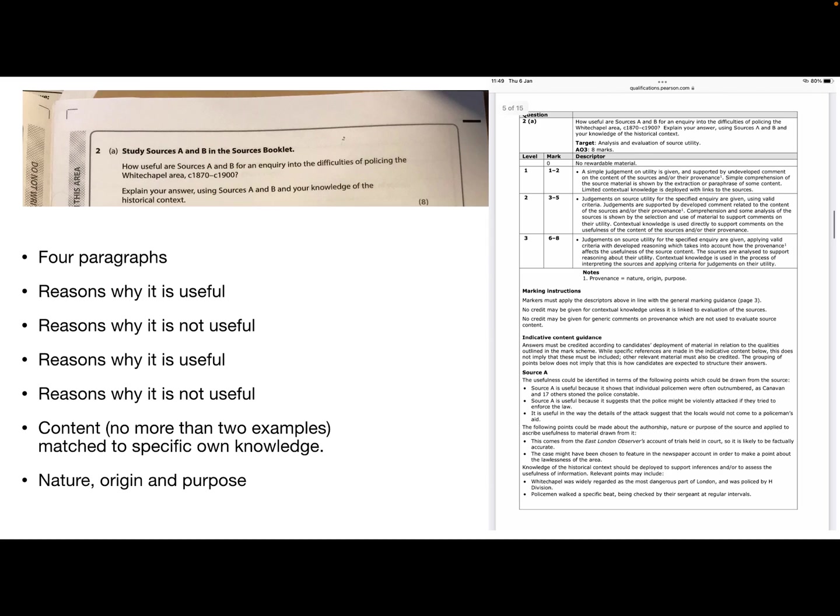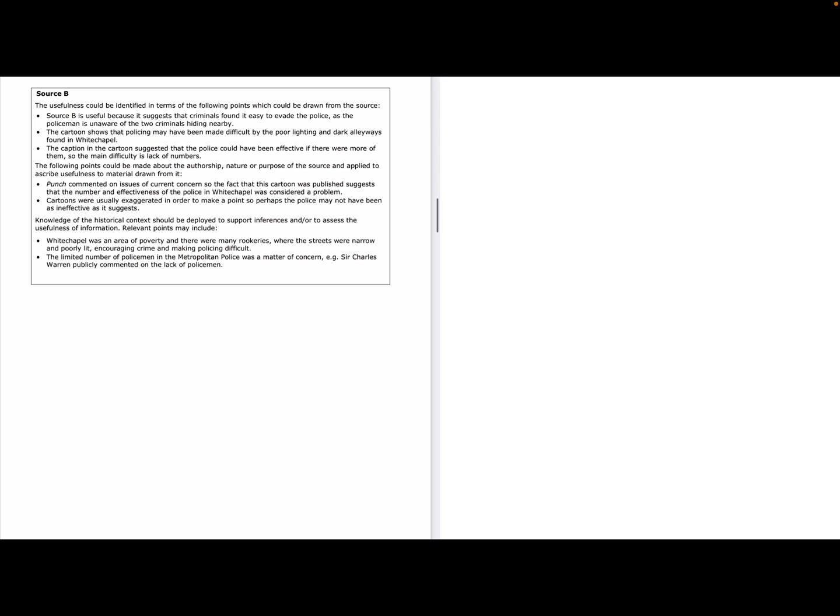It's useful in the ways the details of the attack suggest the locals would not come to a policeman's aid. The following points could be made about authorship, nature or purpose of the source and applied to ascribe usefulness to the material. It comes from the East London Observer's account of trials held in court. So it's likely to be factually accurate if it's just reporting on the court cases. The case may or might have been chosen to feature in the newspaper account in order to make a point about the lawlessness of the area. So upper class newspapers obviously kind of want to reinforce that idea of the dodgy and dangerous East End and perhaps might be a little bit more supportive of the police and a little bit less supportive of the people of Whitechapel.